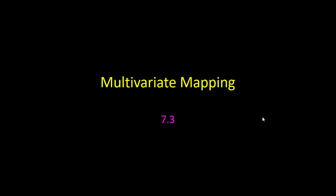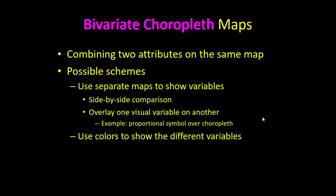Sometimes one variable isn't enough to provide a complete picture. So that's going to be the focus here in section 7.3, which is on multivariate mapping. First, we're going to look at what's called bivariate choropleth maps. The idea is we combine two attributes on the same map. There are several different ways in which we can do this.